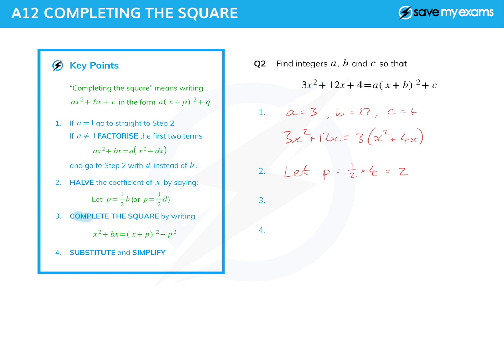And step 3 is the completing the square bit, which we did in the first question. And this time, we're looking at the bit inside the bracket. And we're going to complete the square of that by saying it is, well, according to my rule, in step three here, x squared plus dx, in fact, is x plus p all squared minus p squared. So let's do that. So x squared plus 4x is x plus 2 all squared, because that's p, minus 2 squared, and 2 squared is again 4. And we've done the hard bit now.